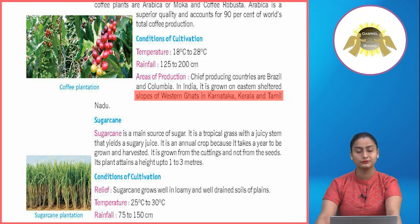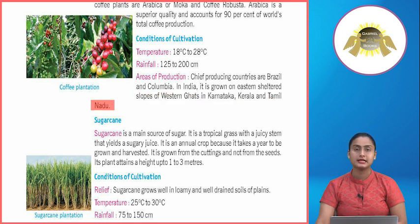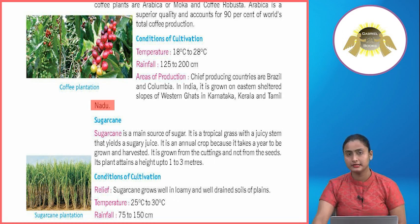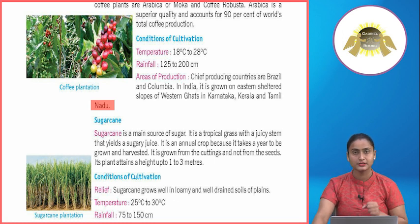In India, coffee is grown on the eastern sheltered slopes of the Western Ghats in Karnataka, Kerala and Tamil Nadu.